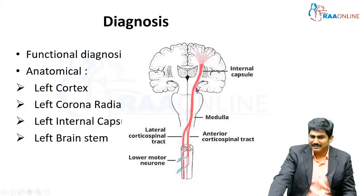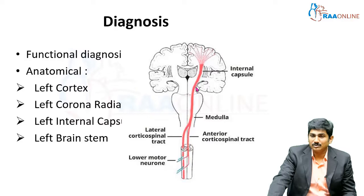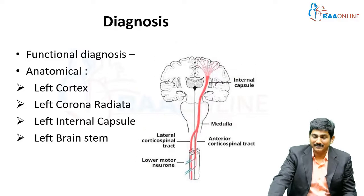Could this be in the brainstem? If the lesion were in the brainstem, the brainstem nuclei should have been affected, but it is clearly mentioned that no other cranial nerves were affected. So brainstem involvement is less likely.